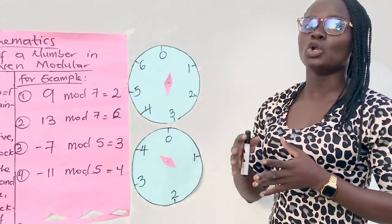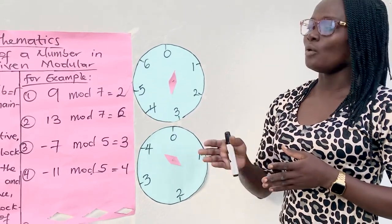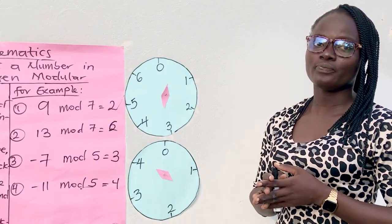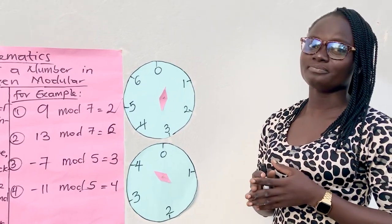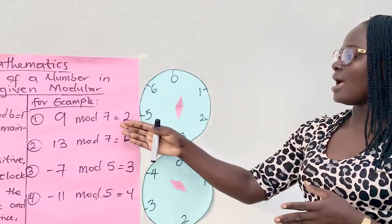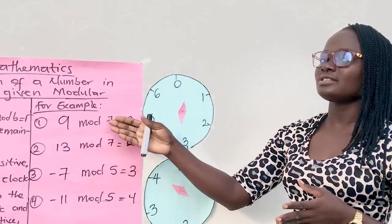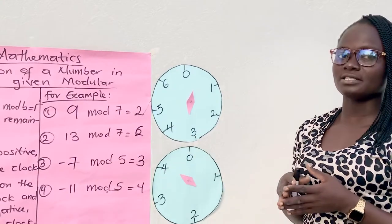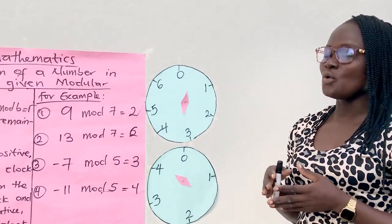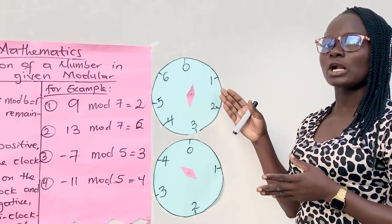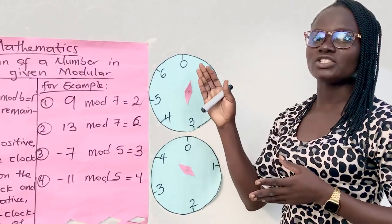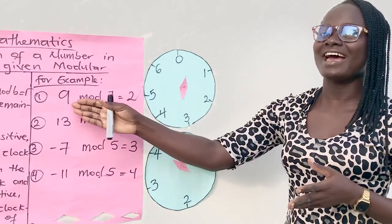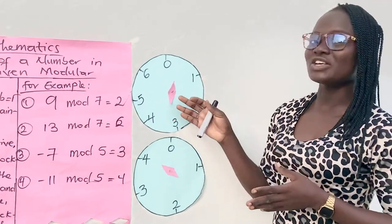We are working on modulo seven. When I write mod, it is a short form of modulo, so it is the same thing. Here I have nine mod seven. It means that our A is positive. Therefore, we are going to go in the clockwise direction starting from zero. How many times? Nine times. Let's go through together.